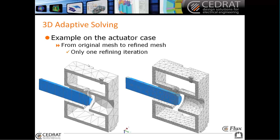Here you can see on another example a very bad mesh at the beginning. After only one refining iteration, you can obtain this kind of mesh, which is thin enough here in this box to be correct. And here you can see that it has not refined the mesh elsewhere. So it will refine mainly where the physics is happening inside the device.